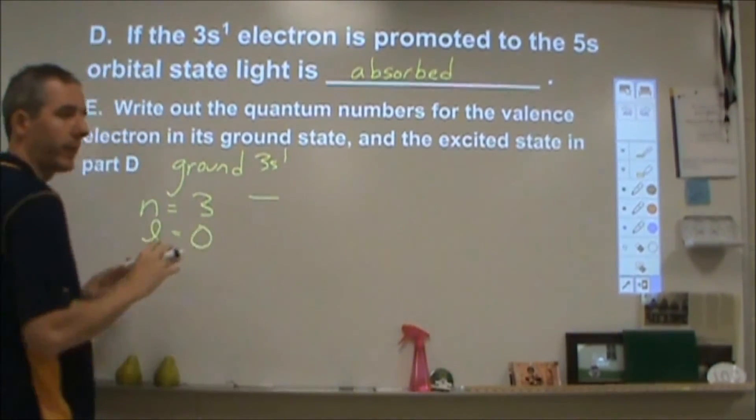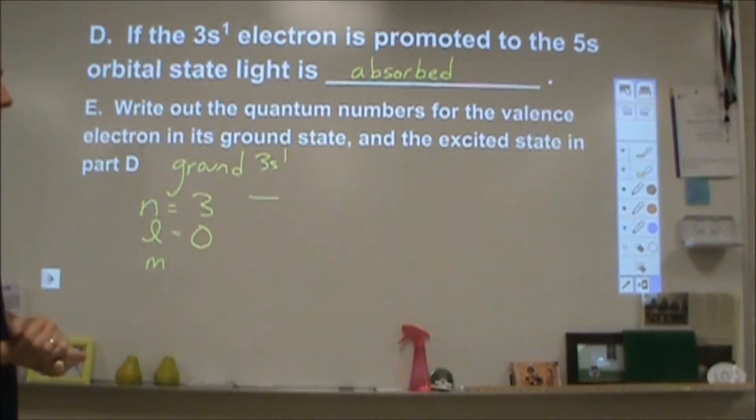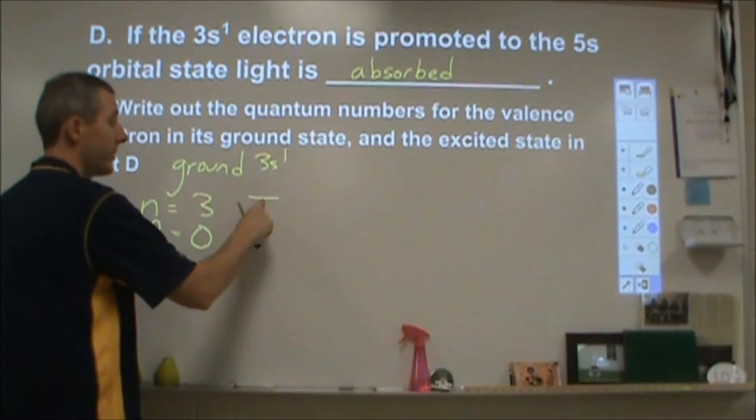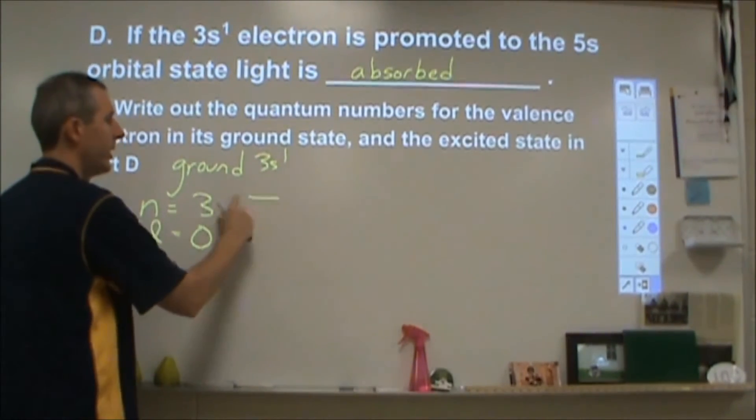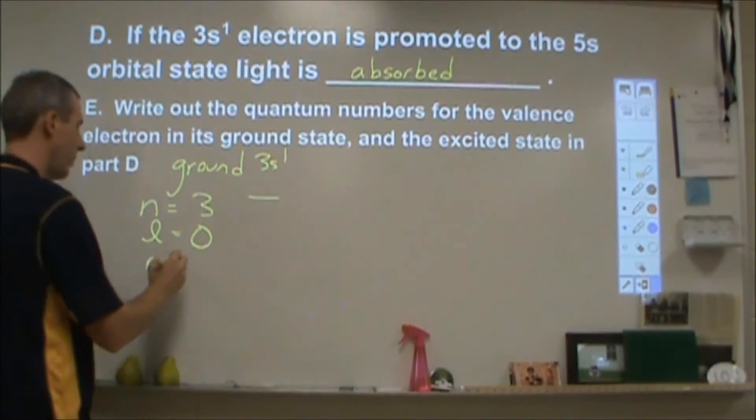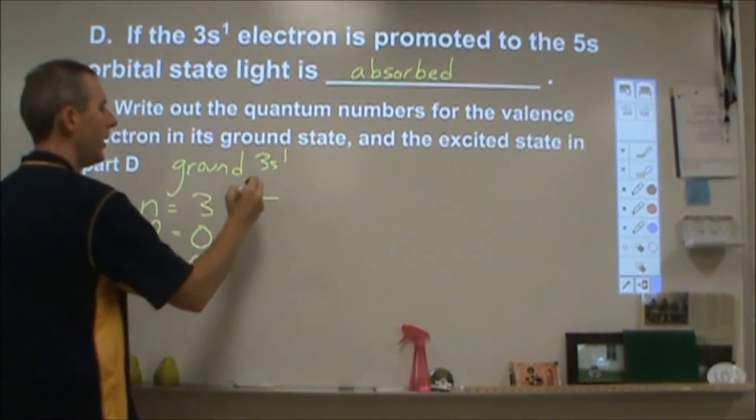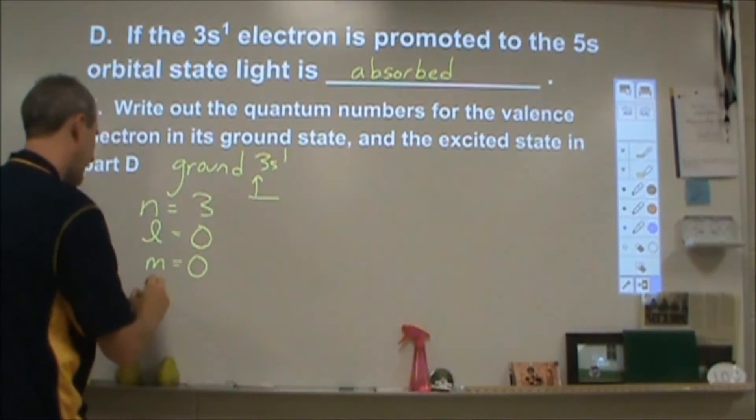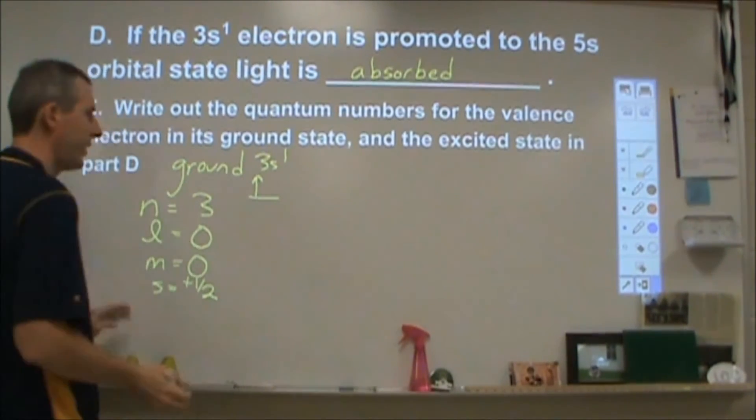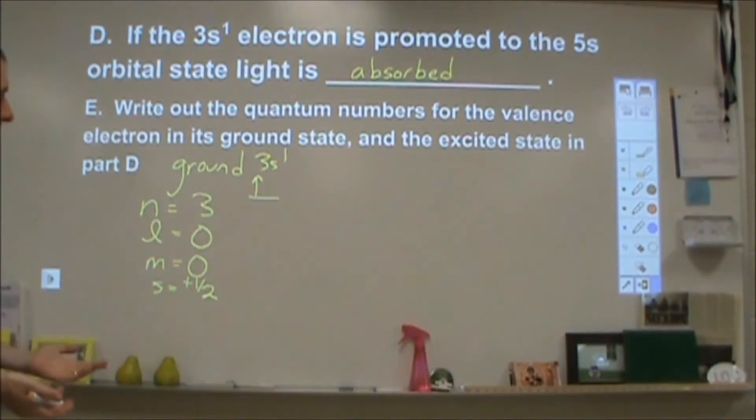For m, it's which orbital. So for 3s1, there's only one orbital of s nature in each energy level. The m's start at 0, and then as you move out, they go up and down. So for just one, the only option we have is 0. And then finally, the spin can be up or down, so we could have plus 1 half or minus 1 half. Either one is fine.